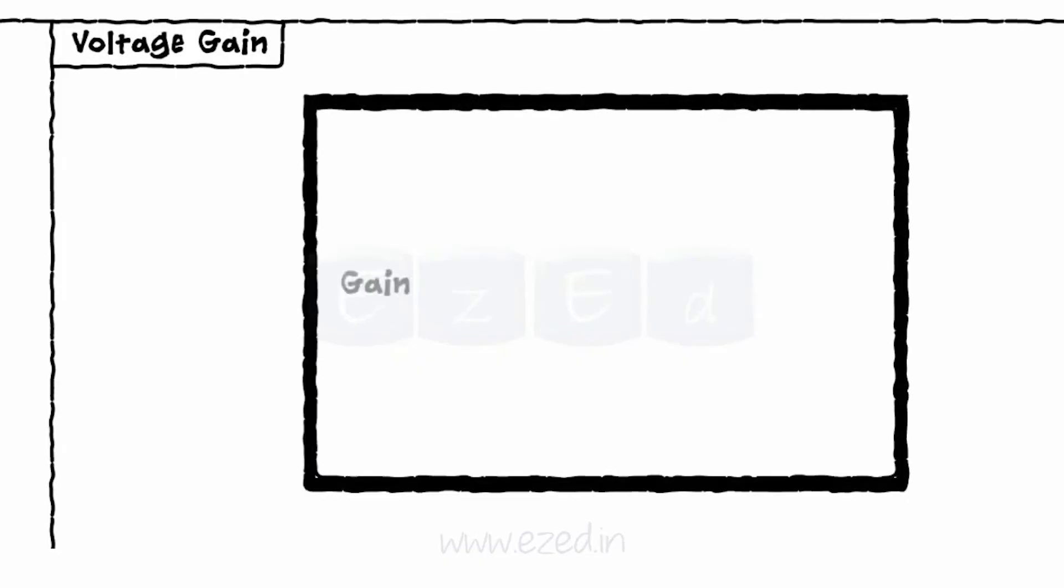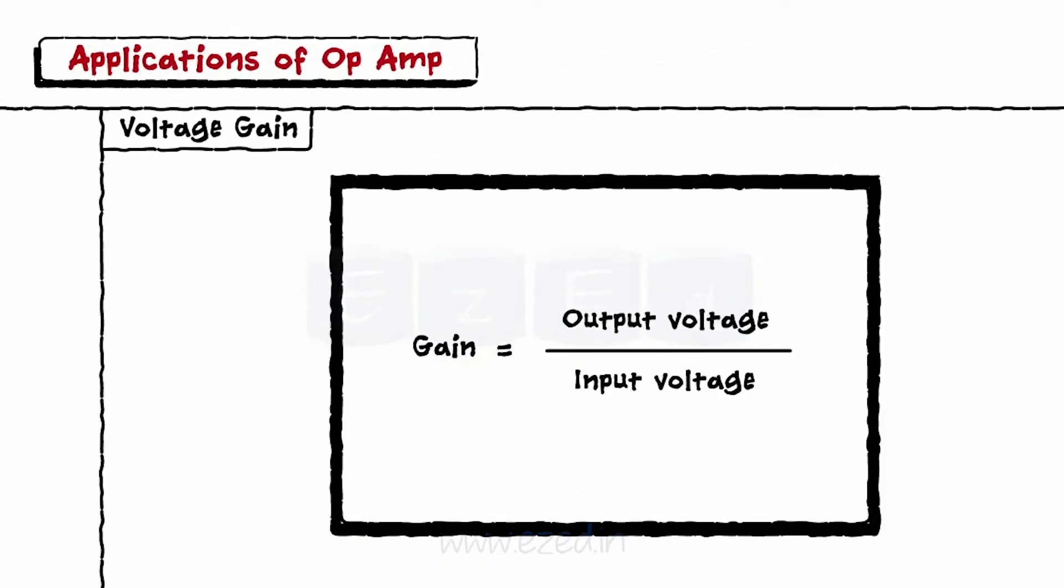Let's start with voltage gain. It is defined as the ratio of output voltage to input voltage.